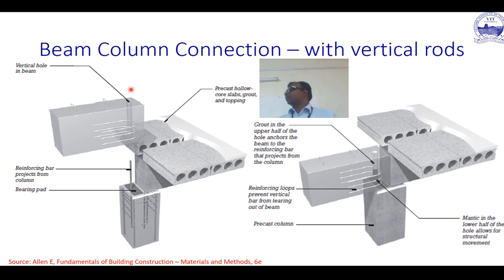According to European guidelines, there are five or six points to take into account when going into a design. Mechanical resistance and stability is essentially the strength of the section. These are parameters you might be looking at in addition to the normal design of the section.